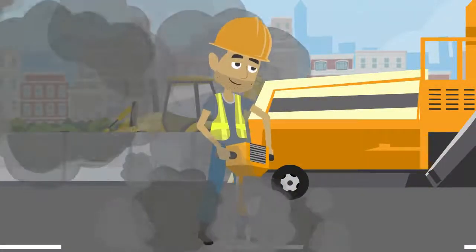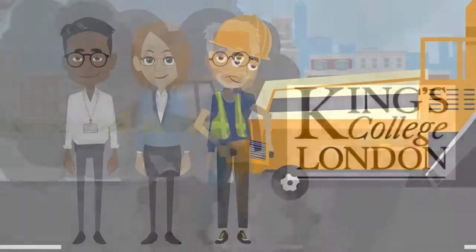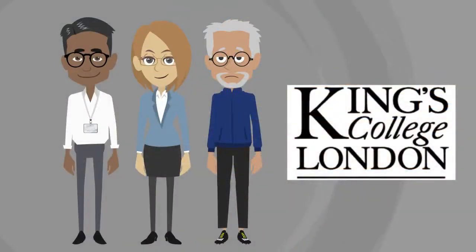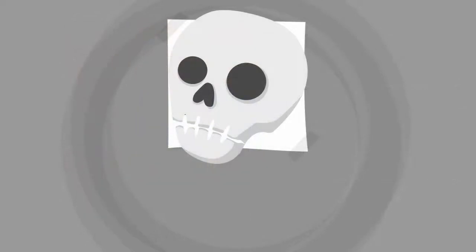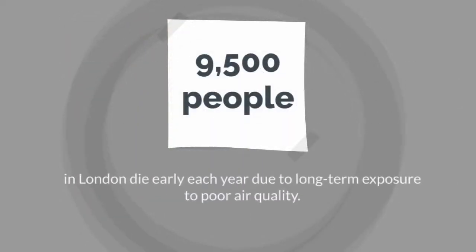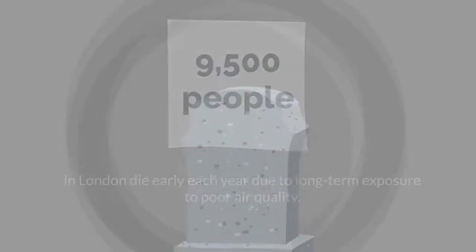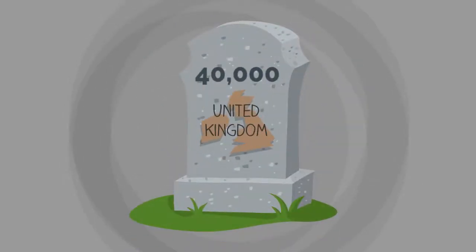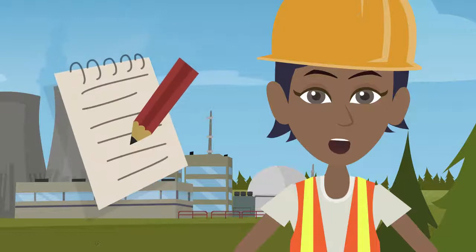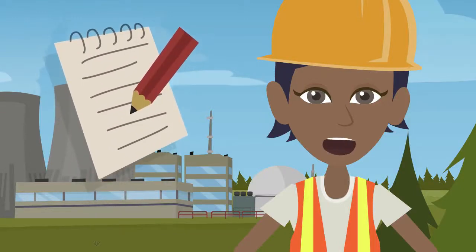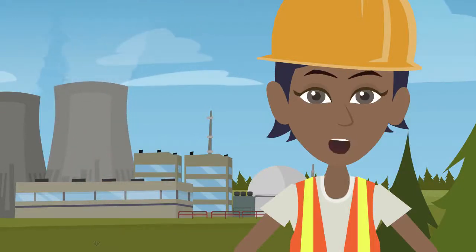For example, in a recent study commissioned by the Greater London Authority, researchers from King's College estimated that nearly 9,500 people die early each year in London from long-term exposure to air pollution. Across the UK this number is estimated to be nearer 40,000. As a result, regulations are getting tighter on the machines and activities which cause air pollution — but first, let's introduce you to what it actually is.